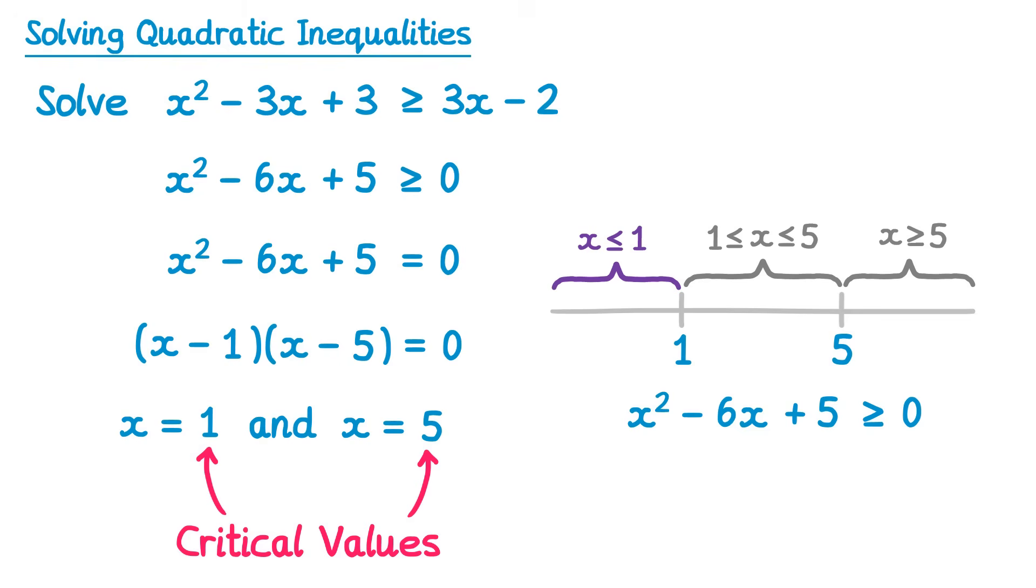We need to select a number from this section, substitute it into the inequality, and check if it works. I'm going to pick 0 since that's an easy number to deal with. So if I substitute 0 in for x, I get 0 squared, minus 6 lots of 0, plus 5. 0 squared is just 0, so that will disappear. Negative 6 times 0, that disappears too, so I'm just left with 5. And 5 is greater than or equal to 0. So this one works. This means this section will form part of our solution.